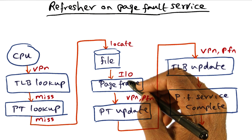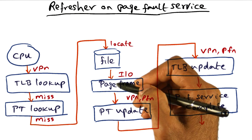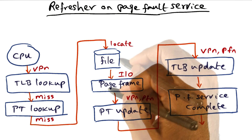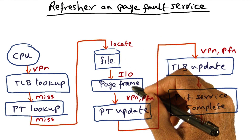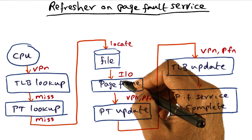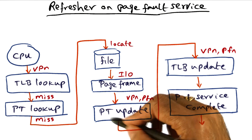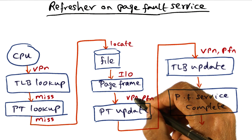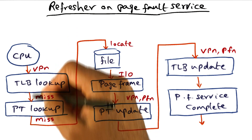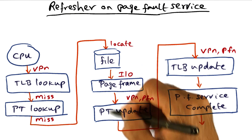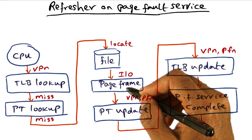As part of the page fault service, the operating system has to allocate a physical page frame, since it is missing in physical memory, and perform the I/O to move the virtual page from the disk into the allocated page frame. Once the I/O is complete, the operating system can update the page table to indicate there is now a mapping between that virtual page and the physical frame number.